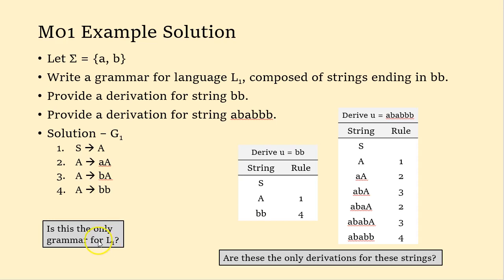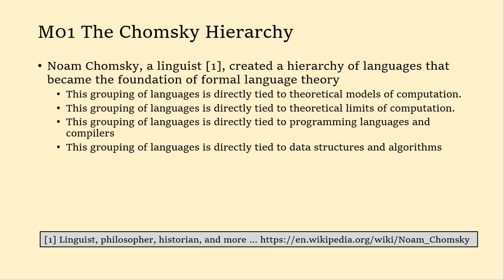Now let's talk about the Chomsky hierarchy. This particular grammar creates strings from left to right, but that's not always the case with certain languages or sets of strings. Noam Chomsky, a linguist, created a hierarchy of languages that became the foundation for formal language theory. It's tied to almost everything fundamental in computer science: theoretical models of computation, theoretical limits of computation, programming languages and compilers, data structures and algorithms.